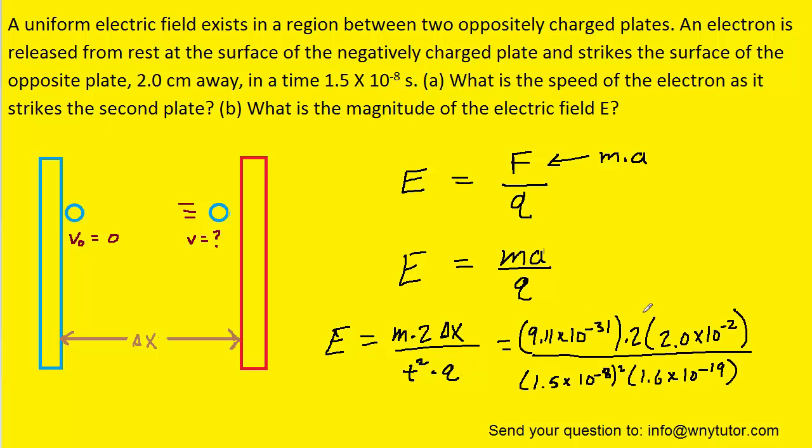And when we simplify this, we get an electric field of approximately 1.0 times 10 to the positive 3 newtons per coulomb. And that is indeed the correct answer to part B.